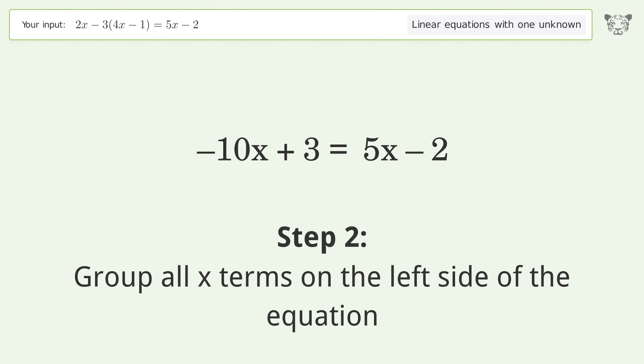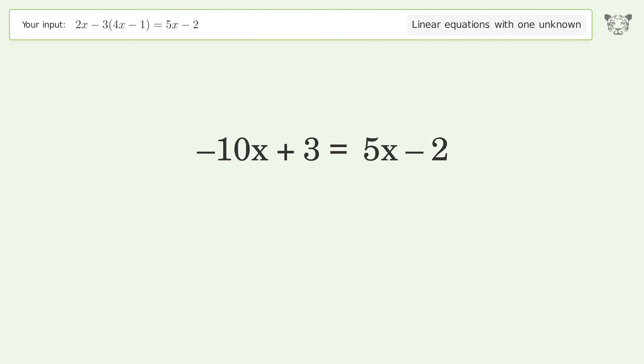Group all x terms on the left side of the equation by subtracting 5x from both sides. Group like terms and simplify the arithmetic. Group like terms again and simplify the arithmetic.